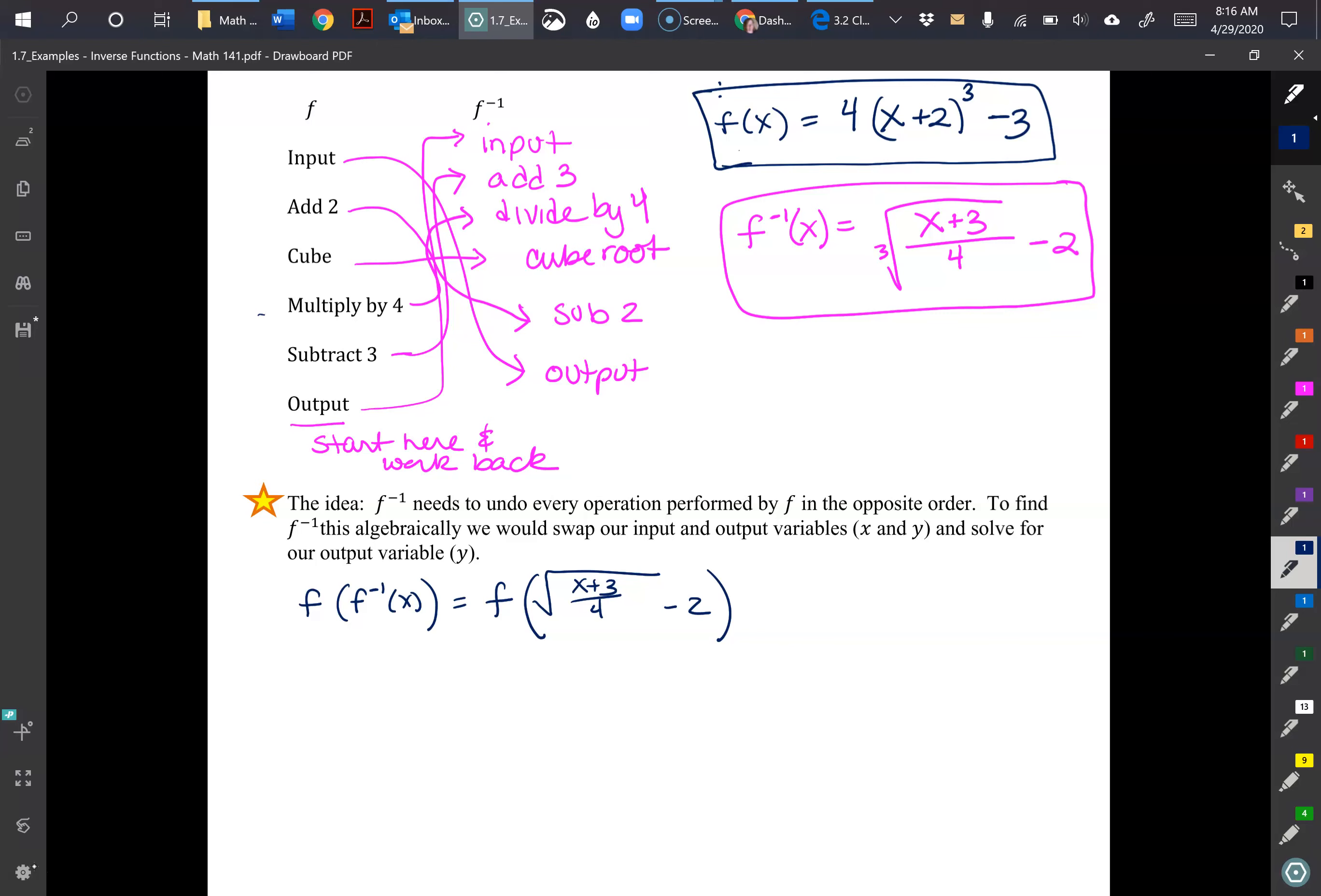Now we are going to look at the first part: F of F inverse of X equals F of whatever that inverse is, which we're looking at this one here, cube root, gonna get my cube in there, X plus 3 over 4 minus 2, and then we're going to plug that in to everywhere we see X in the F function.